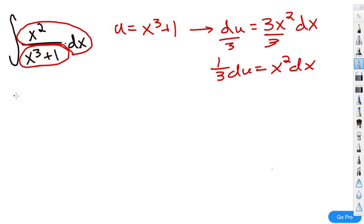So, now I can start substituting things in. So, let's see, this whole thing I can replace with the integral of 1 third du divided by x cubed plus 1. I can replace that with u. And before I start taking the antiderivative, I'm just going to clean it up a little bit. So, this is a constant, that 1 third, so I can move it out in front.